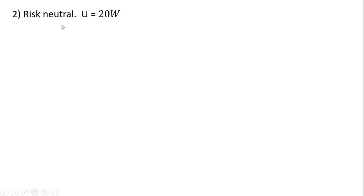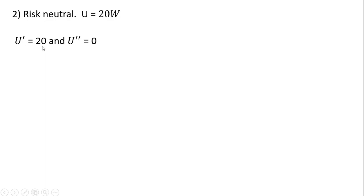Let's take a risk neutral person. In example two we're going to look at a risk neutral person, whereas in example one we did risk averse individuals. So utility equals 20 times wealth. The first derivative is 20. The second derivative — the derivative of 20 — is just 0. And so our measure of risk aversion here is 0, and that's what you'll get for a risk neutral individual.